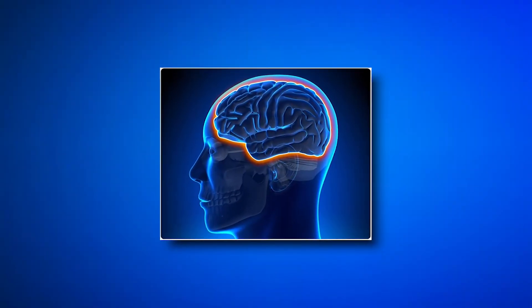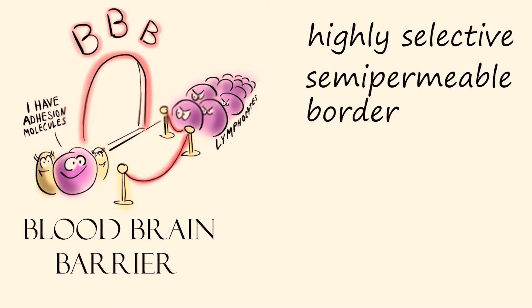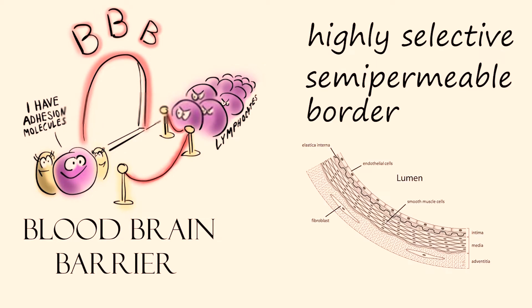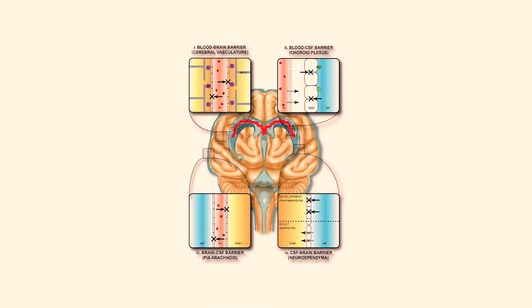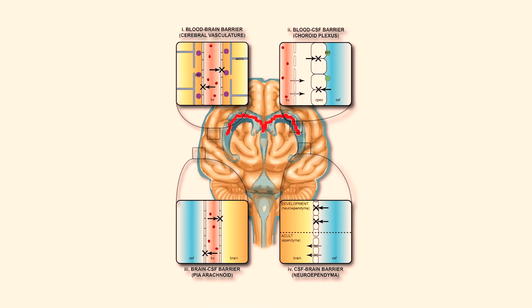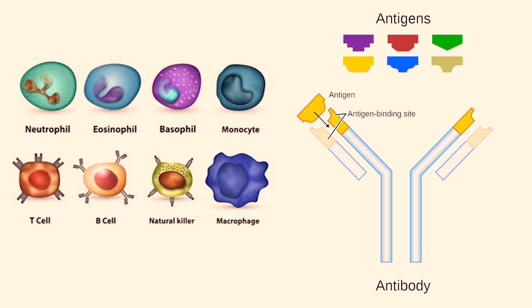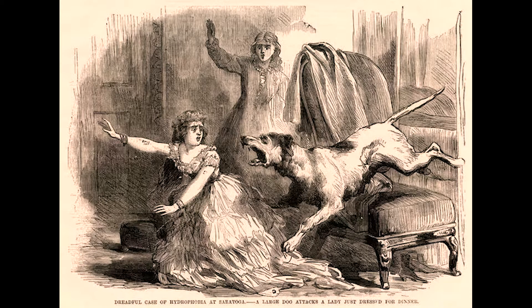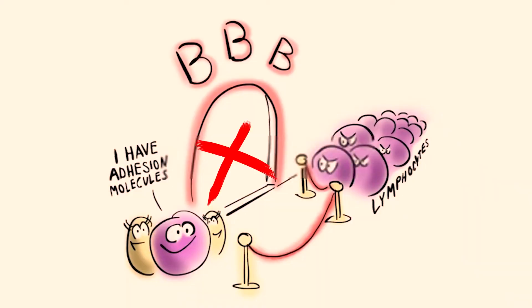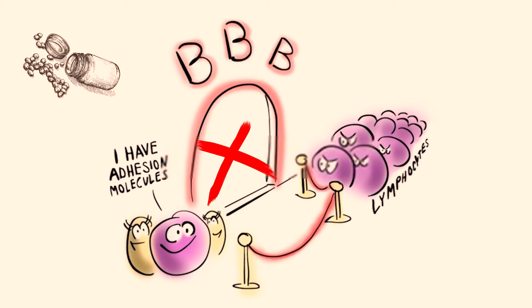It avoids the immune system and hides from antiviral drugs using the blood-brain barrier to protect itself once it has entered the brain. The blood-brain barrier, or BBB, is a highly selective semi-permeable border of endothelial cells that controls what can and cannot get into the brain. During normal infection, the barrier's permeability can increase, allowing immune cells and antibodies through. However, during rabies infection, the blood-brain barrier locks down, meaning nothing can get through — not even antiviral drugs.